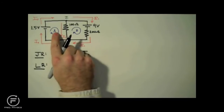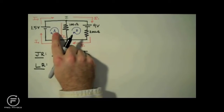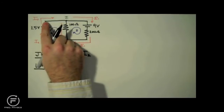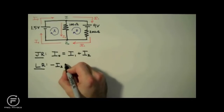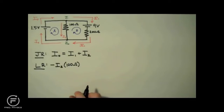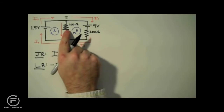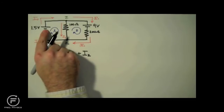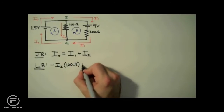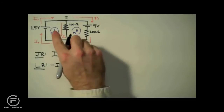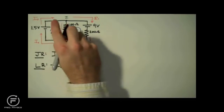Now we apply the loop rule to loop A, which states that the sum of the voltages around a closed loop is equal to zero. Starting in the upper left-hand corner, we're going to move clockwise around loop A. The first component we get to is the 100 ohm resistor. We're traveling clockwise — coming down this leg, moving with the direction of the current — so we have a voltage drop across the resistor, negative IR. I write negative I2 times 100 ohms. Continuing clockwise, the next component is the 1.5 volt battery, where we're moving from negative to positive — a voltage lift — so I write plus 1.5 volts. That's the last component, so I set it equal to zero.